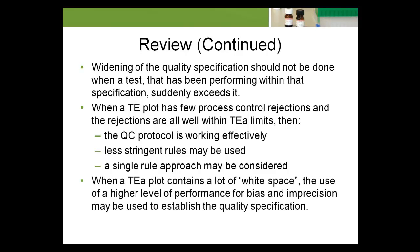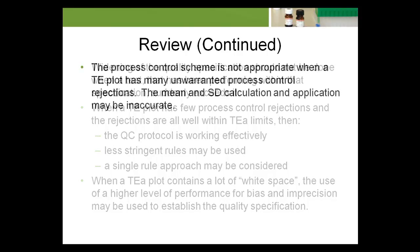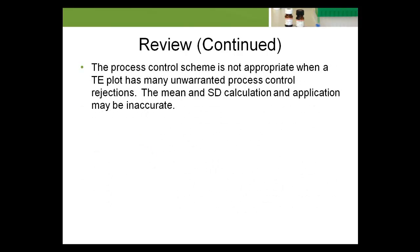When a TEA plot contains a lot of white space, the use of a higher level of performance for bias and imprecision may be used to establish the quality specification. The process control scheme is not appropriate when a TE plot has many unwarranted process control rejections, as the mean and SD calculation and application may be inaccurate.